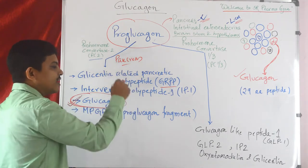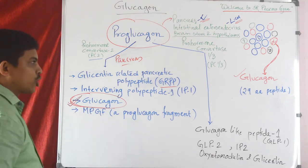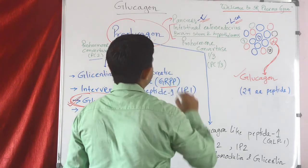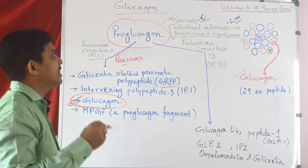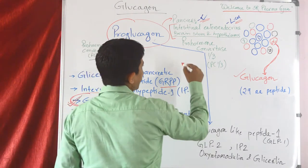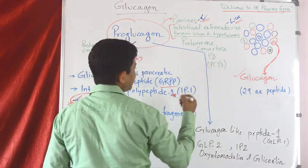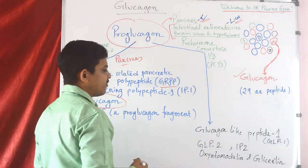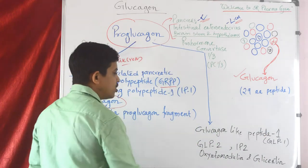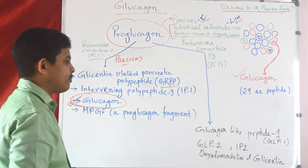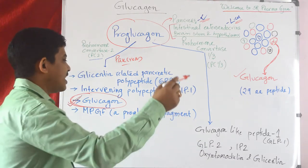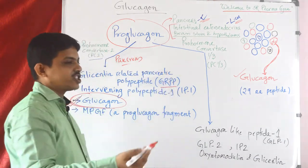Similarly, in the intestinal enteroendocrine L cells and brainstem/hypothalamus, proglucagon in the presence of prohormone convertase 1/3 (PC1/3) converts into glucagon-like peptide 1 (GLP-1), GLP-2, IP2, glycentin, and oxyntomodulin. So this is the conversion process of proglucagon to glucagon and GLP-1.